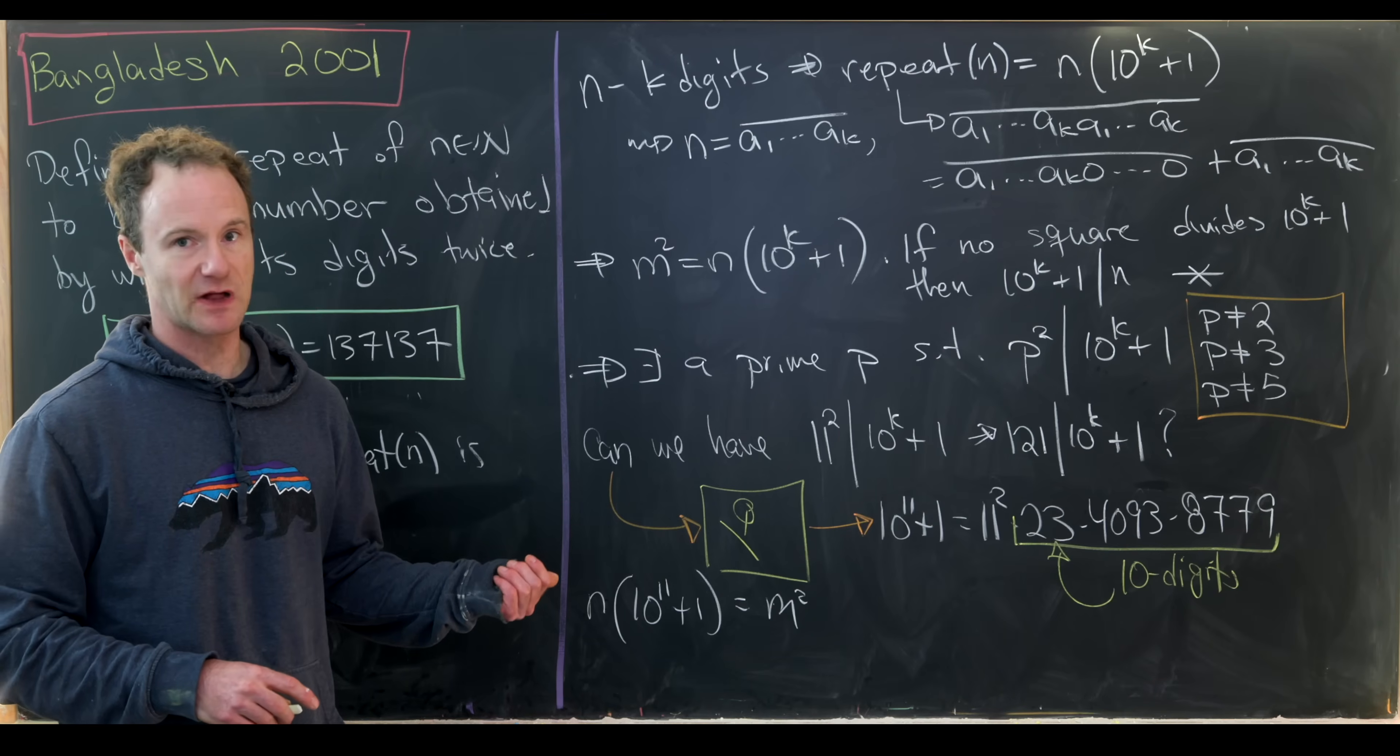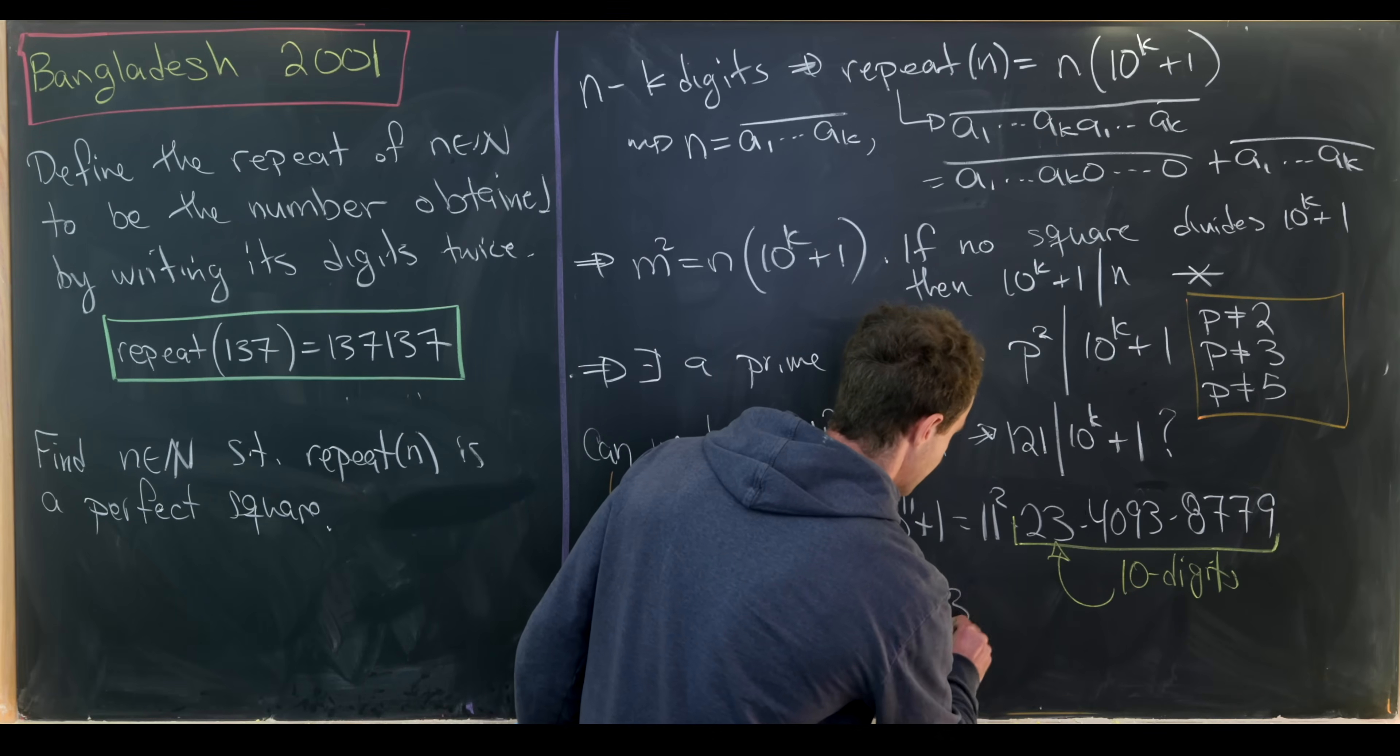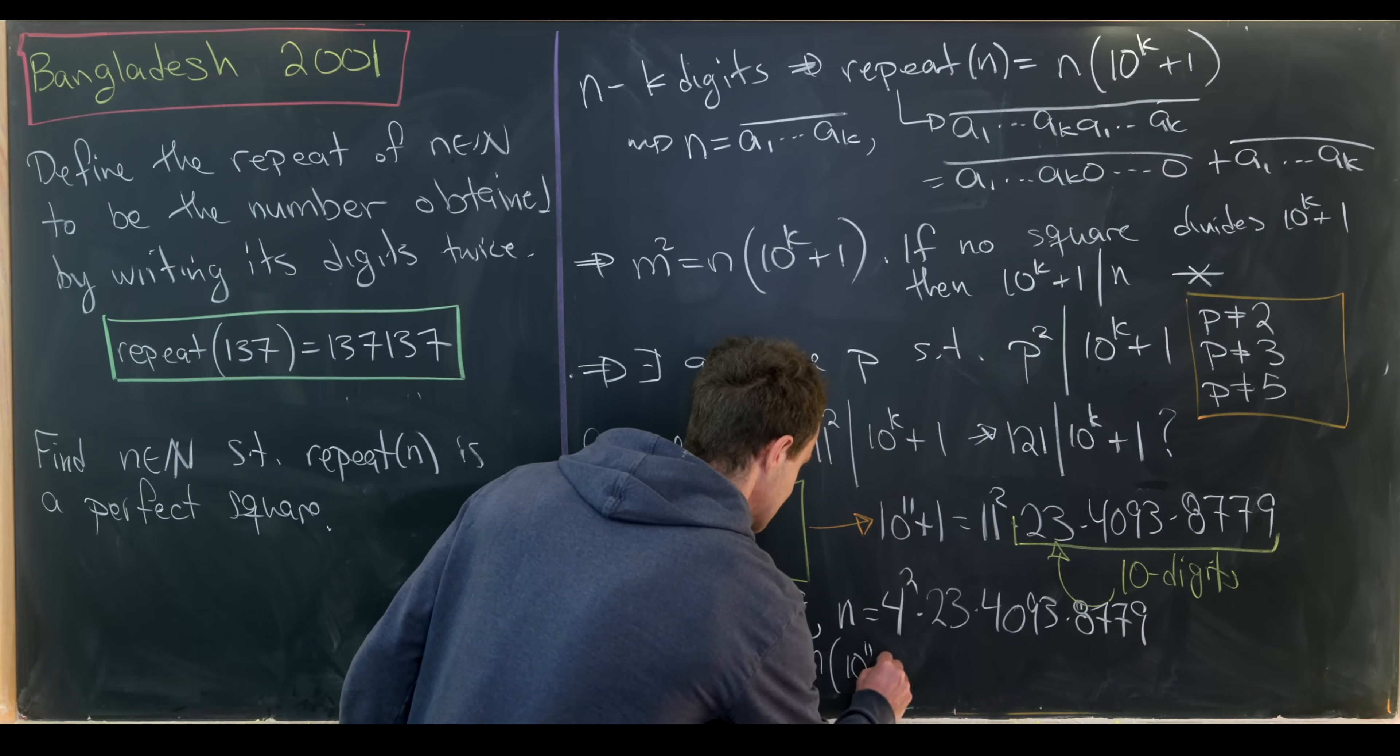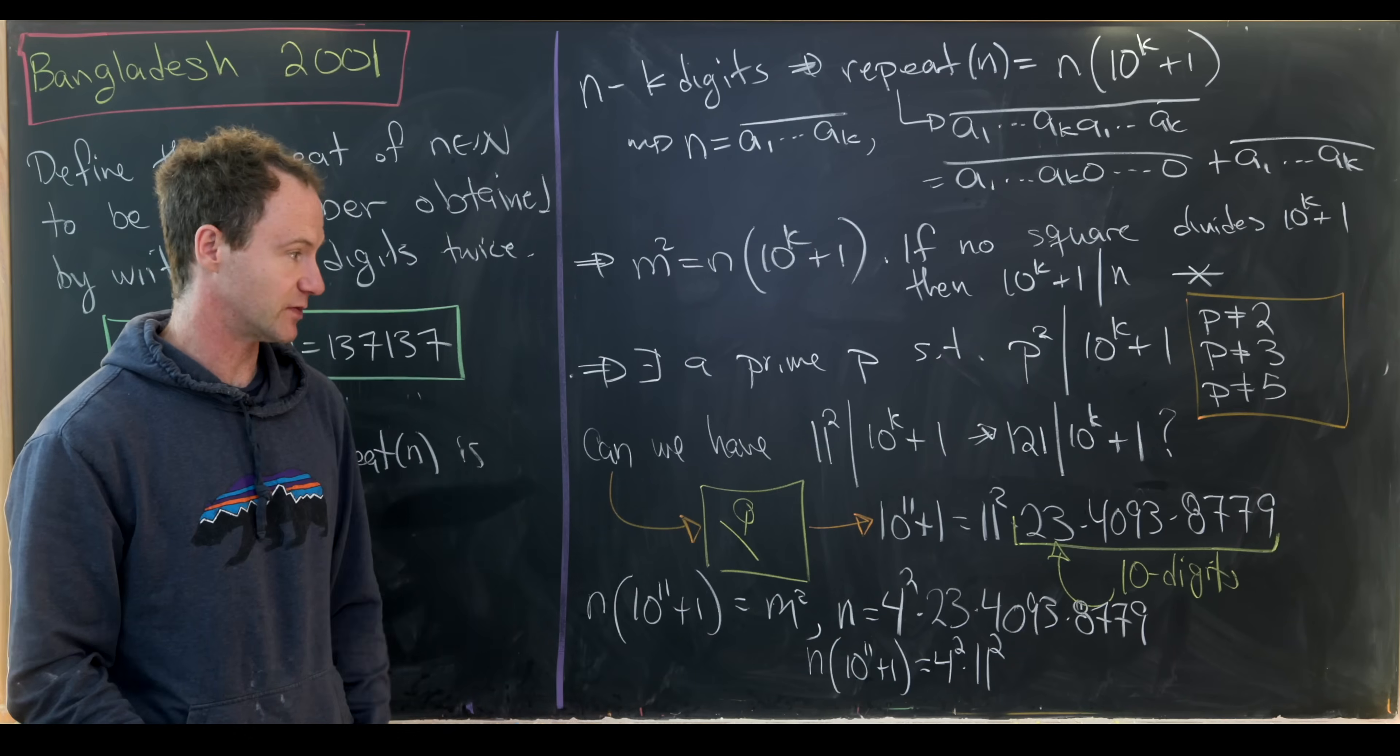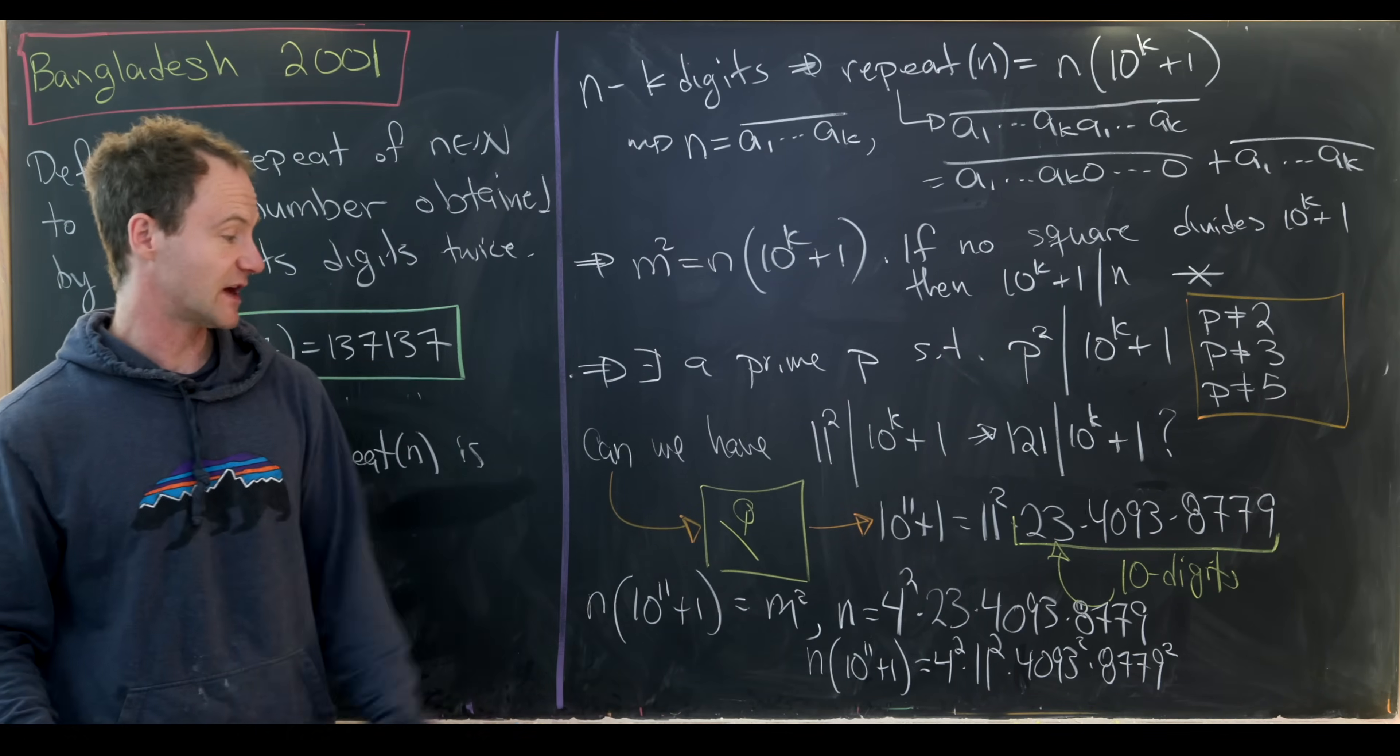So what I did from there is I just multiplied by perfect squares until I got something that was 11 digits long. And all you need to multiply by is 4 squared and that's what works. So just to reiterate, I'll set n equal to 4 squared times 23 times 4,093 times 8,779. And now in this current setup, what we'll have is n times 10 to the 11 plus 1 is equal to 4 squared times 11 squared. So the 4 squared comes from the n, the 11 squared comes from the 10 to the 11 plus 1, and then we've got these other prime factors squared. One of the factors comes from the n and one comes from the 10 to the 11 plus 1. So we'll have 4,093 squared and 8,779 squared. So that's most definitely a perfect square.